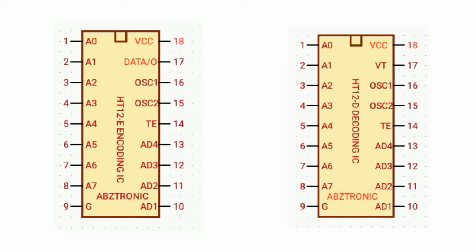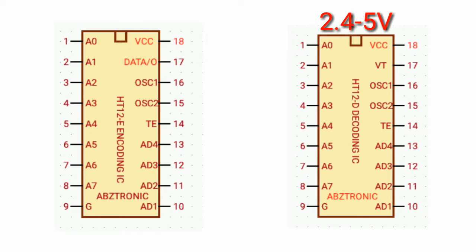The voltage range of the encoding IC, which is HTTURB-E, is 2.4V to 3V, while the voltage range of the HTTURB-D, which is the decoder IC, is 2.4V to 5V.